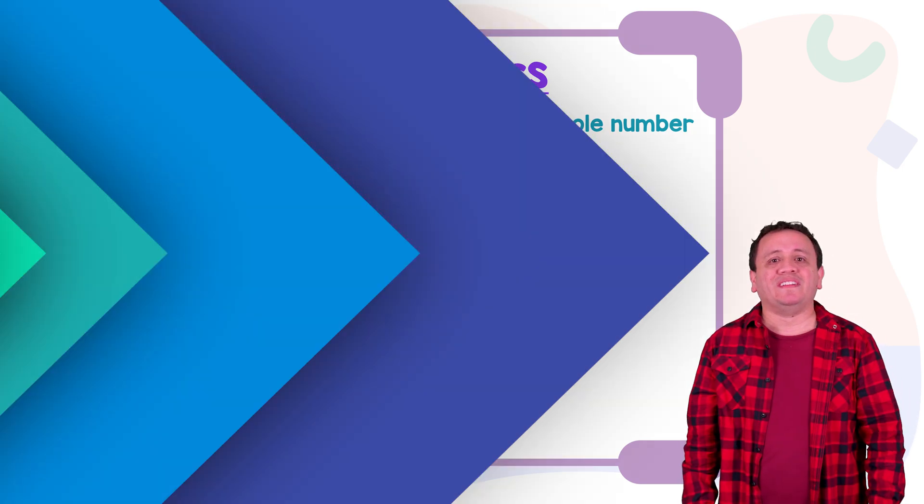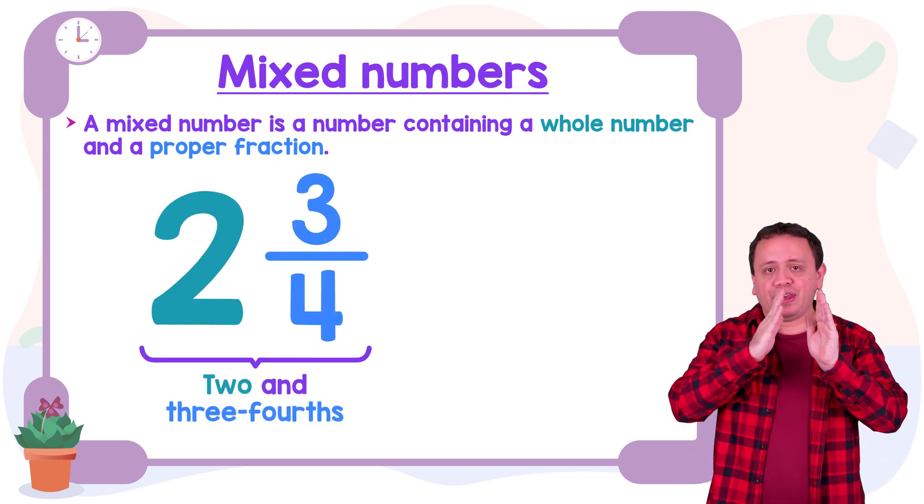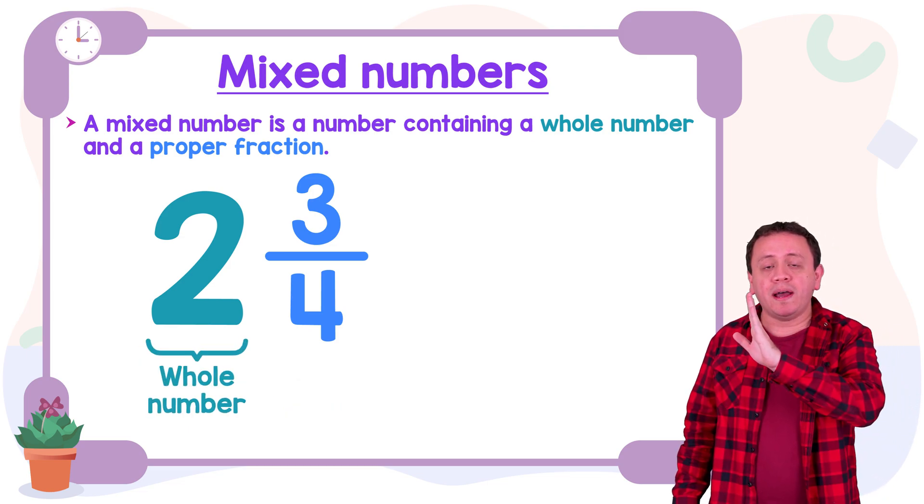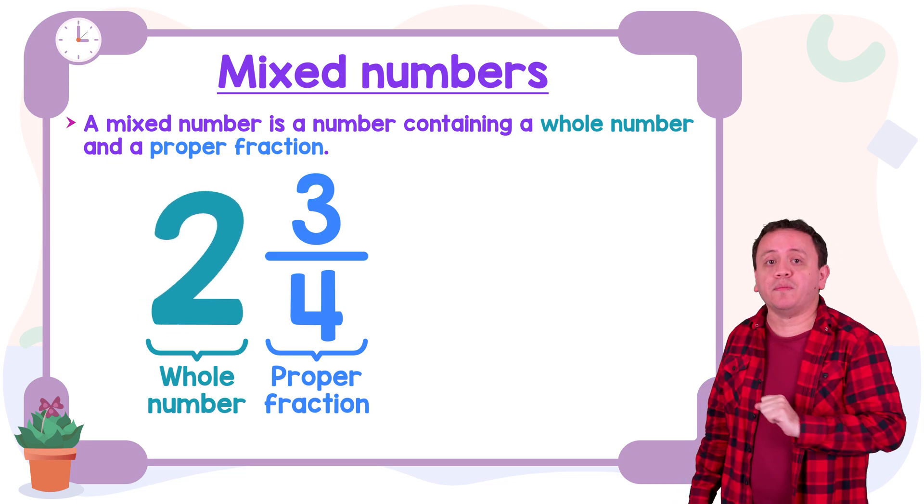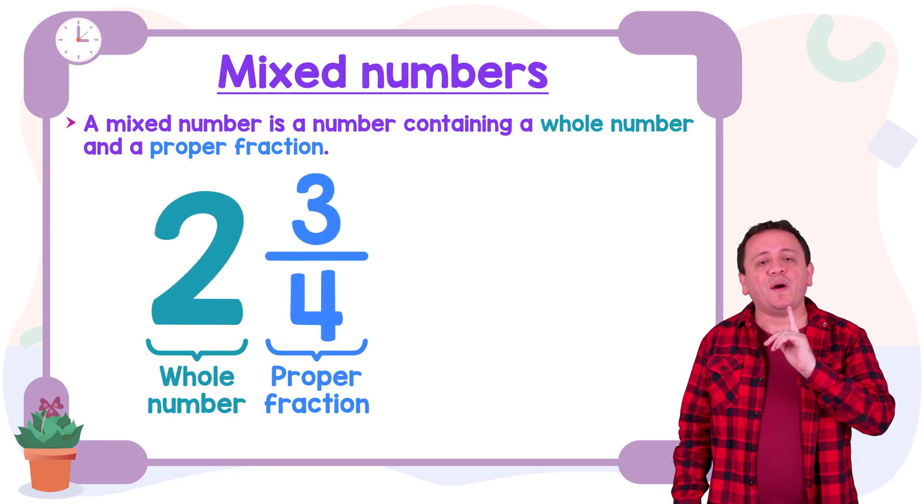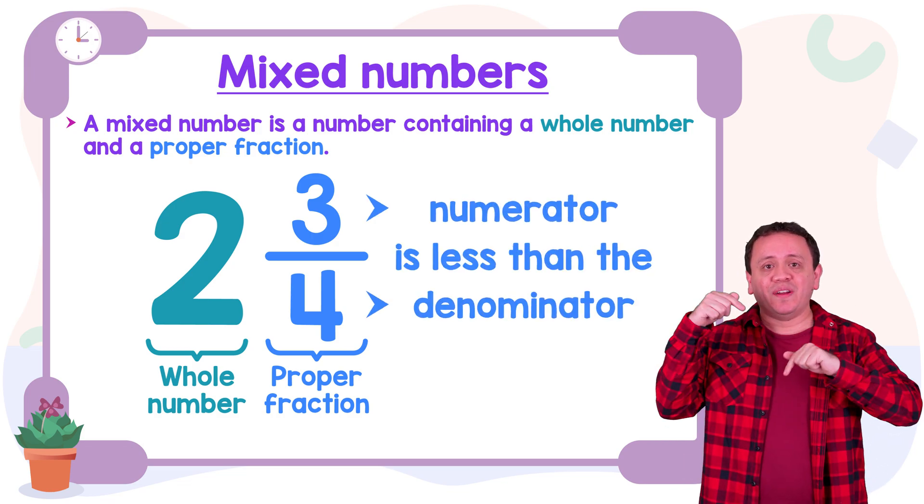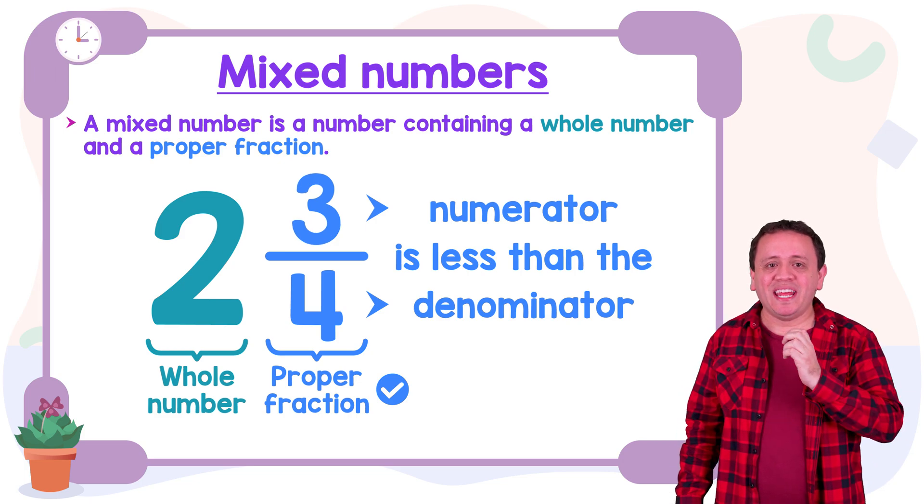Let's continue with another example. Here we have another example. This mixed number is read as 2 and 3 fourths. Don't forget that a mixed number is a number containing a whole number and a proper fraction. Here we have 2 wholes and the proper fraction 3 fourths. And we know that this is a proper fraction because the numerator is less than the denominator. That is right, the numerator 3 is less than the denominator 4.